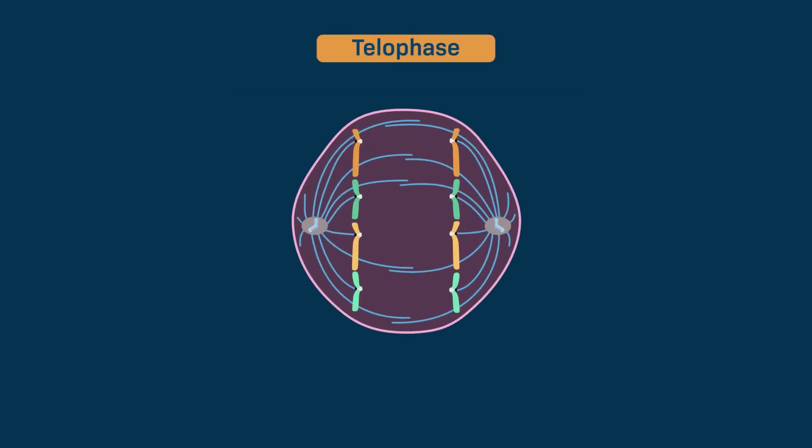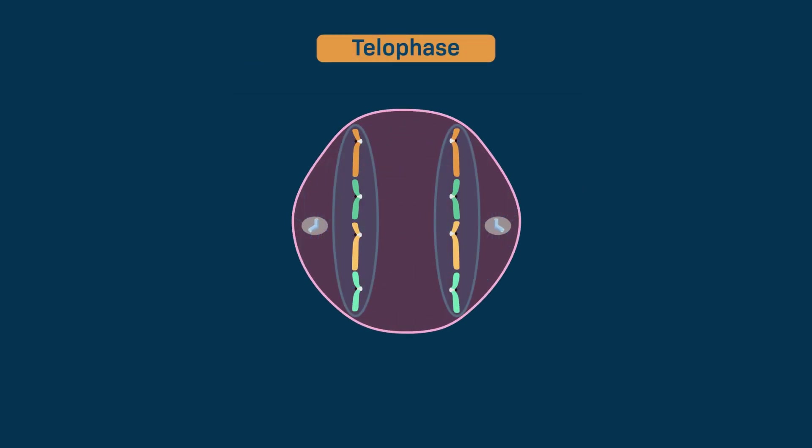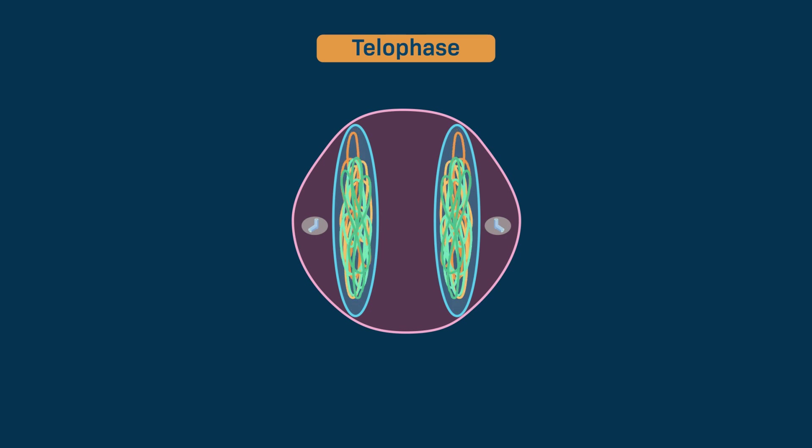Finally, during telophase, the mitotic spindle breaks down and a nuclear envelope forms around each set of chromosomes. The chromosomes then decondense and appear as long, thin fibers. At this point, we have two nuclei that contain identical genetic material.